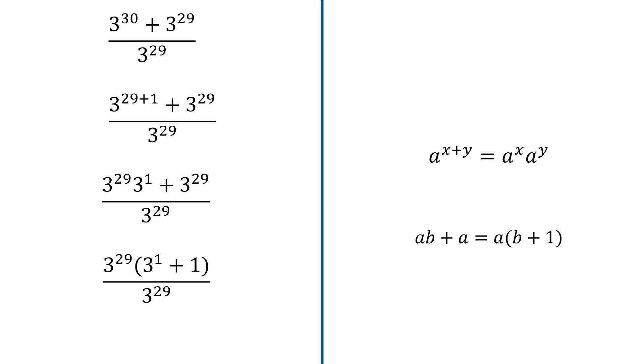So now you realize you can divide 3 exponent 29 by 3 exponent 29 and simplify what's in the brackets as 3 plus 1, which is equal to 4. So I have 1 times 4, which is 4. So the final answer is 4.